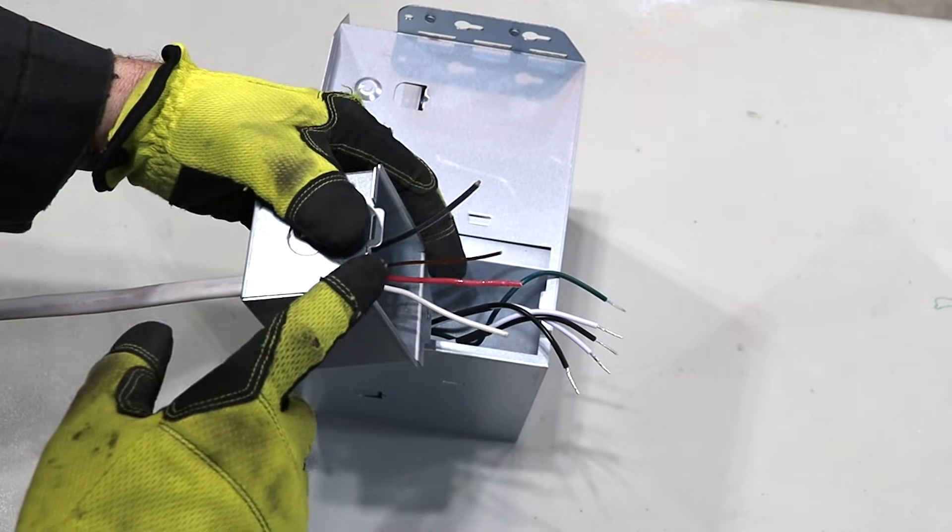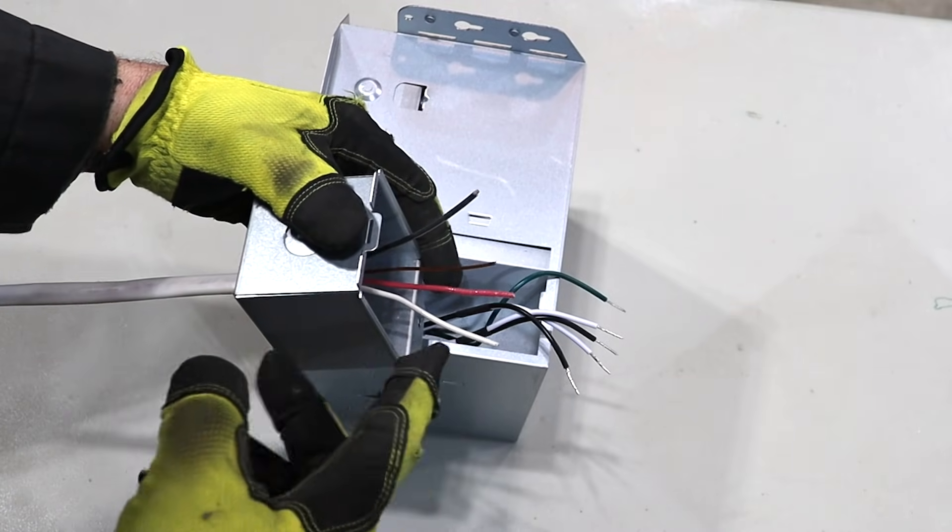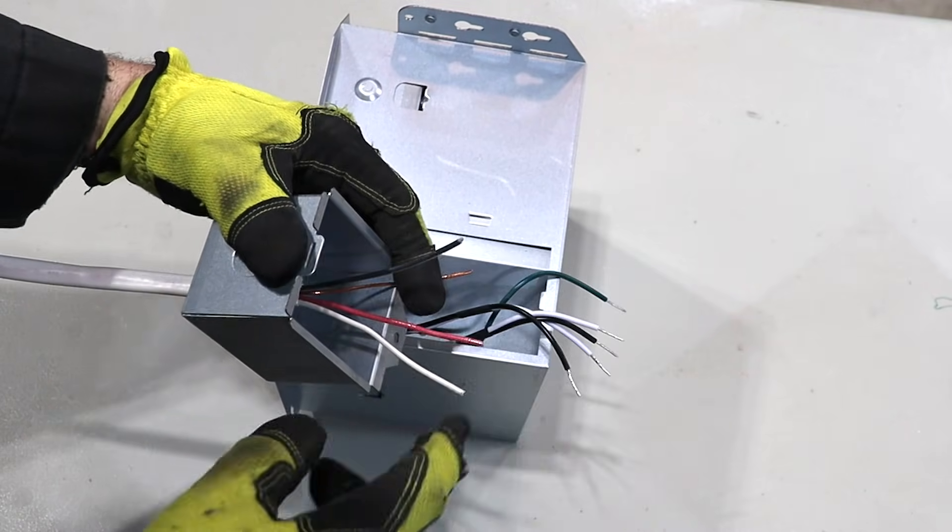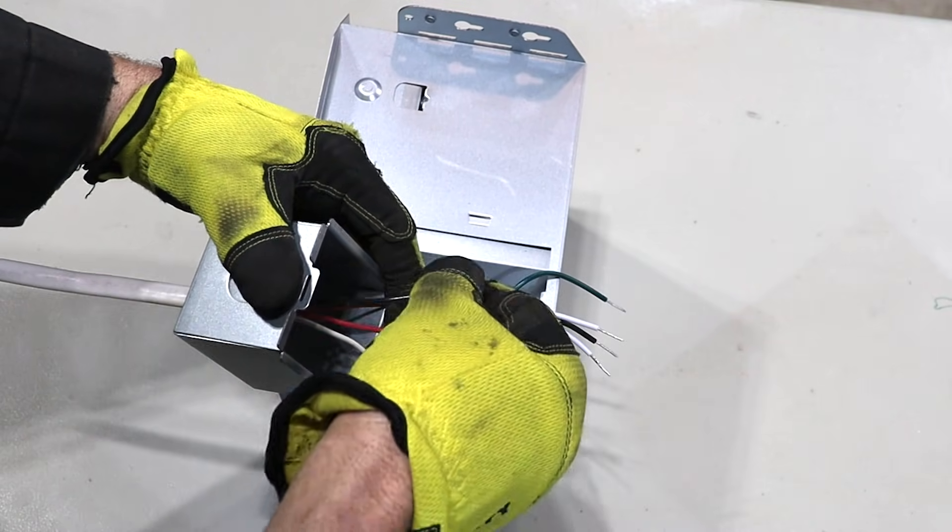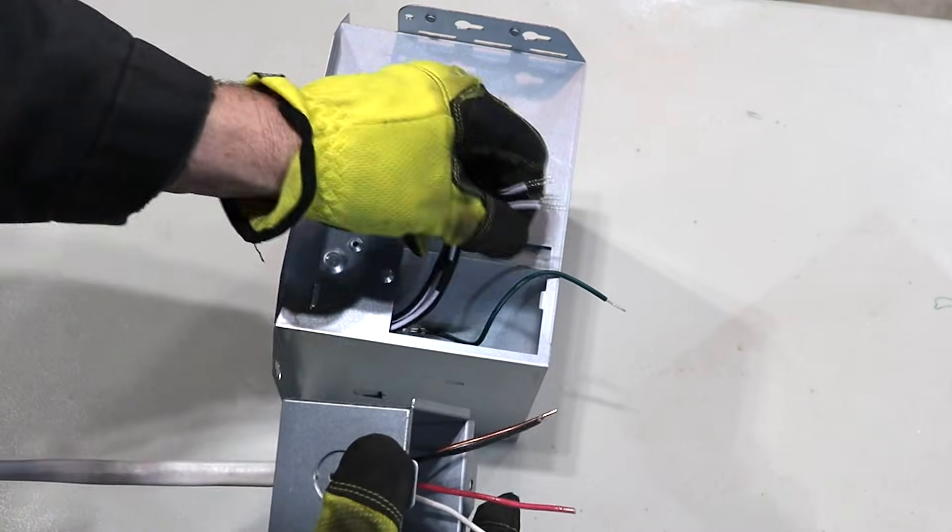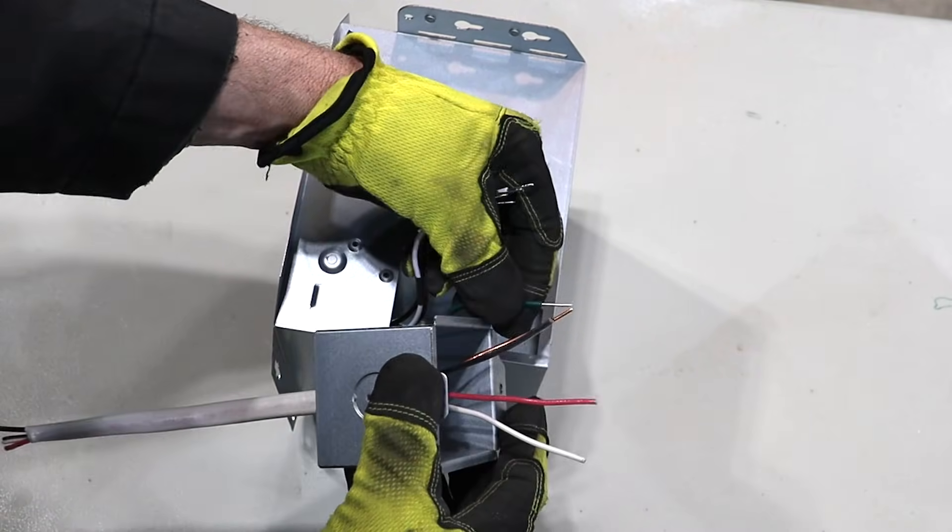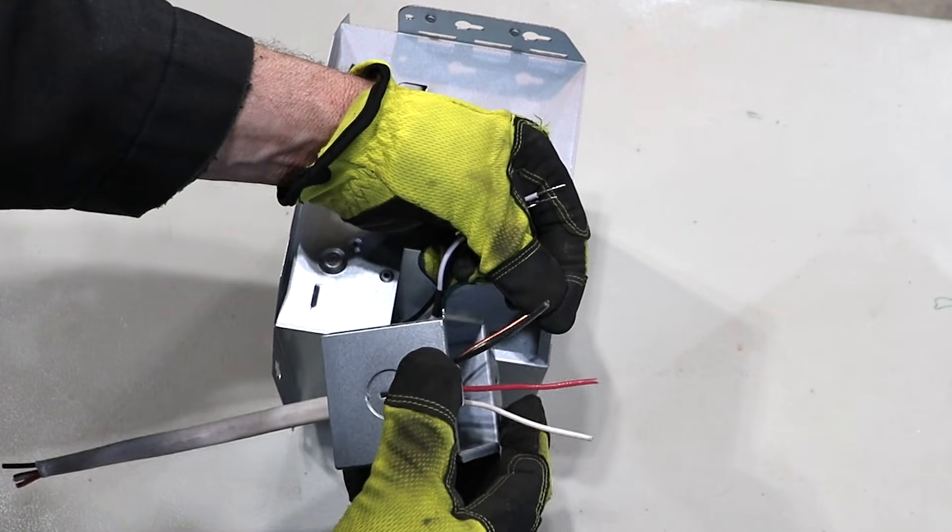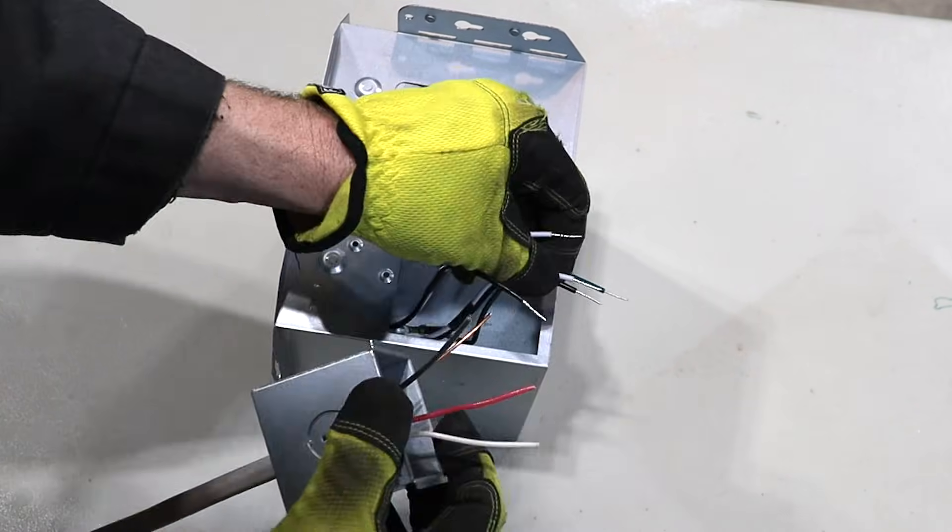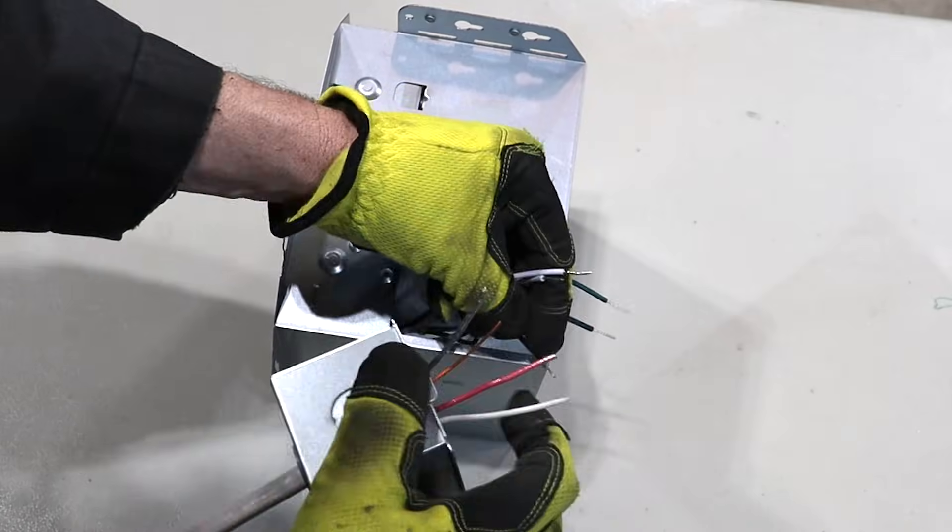But now we're going to use 14 three wire which means there's three conductors. 14 gauge wire, three conductors. Ground doesn't count as a conductor. Here's your three conductors. You have two hots and a neutral. Well you already know that you can wire nut the two grounds together and you also know that you can wire nut the two neutrals together.